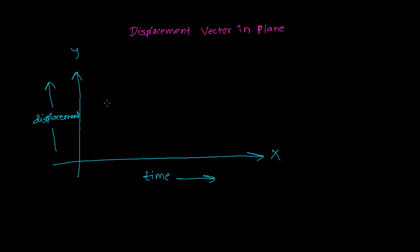Now, at a certain time — let's say at time t equals t1 — an object is at position A. I can give the position vector of this object by connecting it with the origin. So the position of that object right now is given by vector OA.